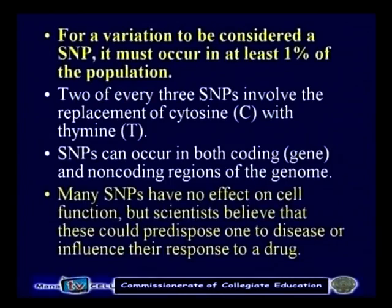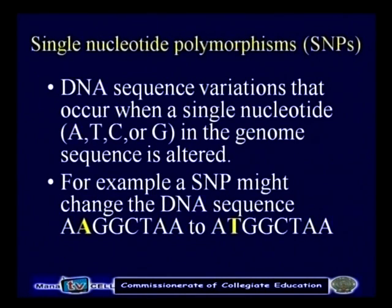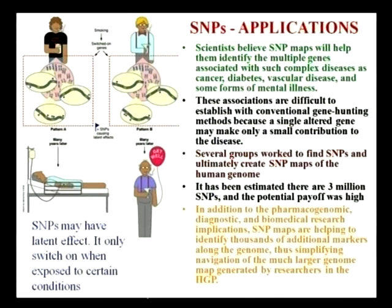Coming to SNPs — Single Nucleotide Polymorphisms — these are very important. A SNP is a DNA sequence variation that occurs when a single nucleotide — adenine, thymine, cytosine, or guanine — in the genome sequence is altered. A SNP might change the DNA sequence into a different sequence. These are very important in the diagnosis and curing of cancer. With this, I will end this session and advise you to visit the NCBI website and also search zoologyprgc.ac.blogspot.in for different information. Thank you very much.